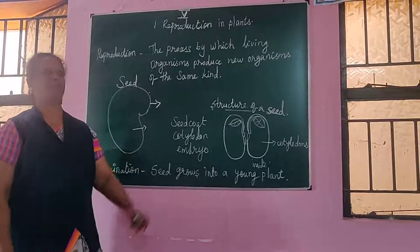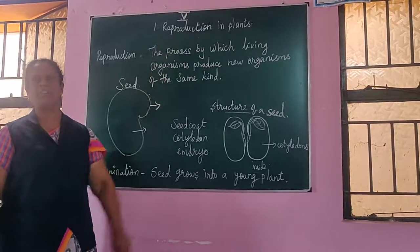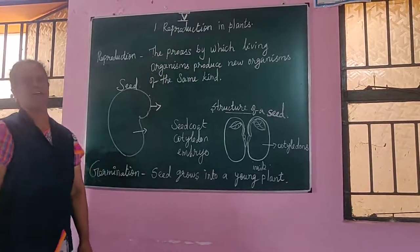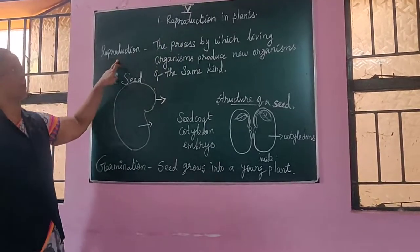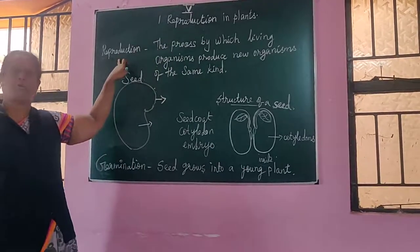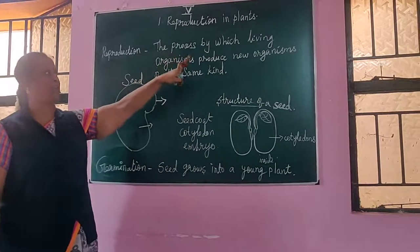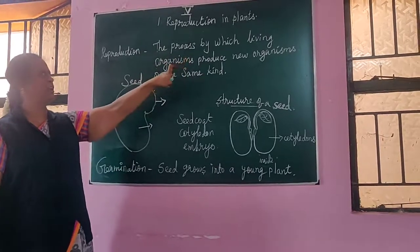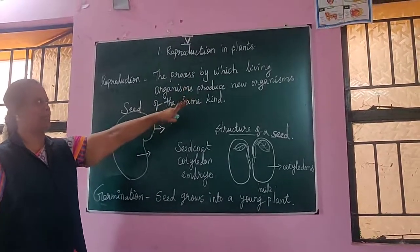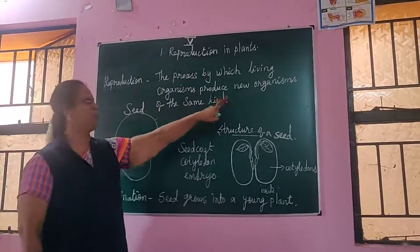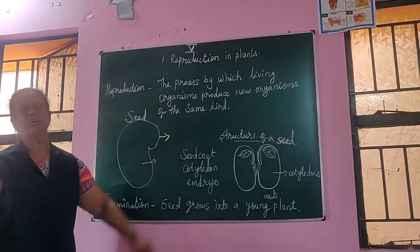Good morning to all. Now we will see the lesson: Reproduction in Plants. First we have to see what reproduction means. Reproduction is the process by which living organisms produce new organisms of the same kind.